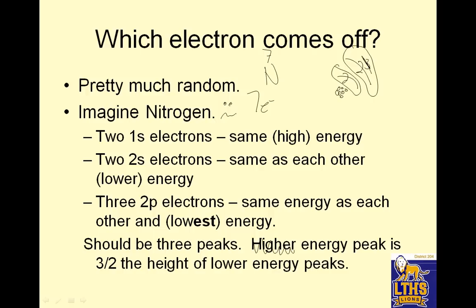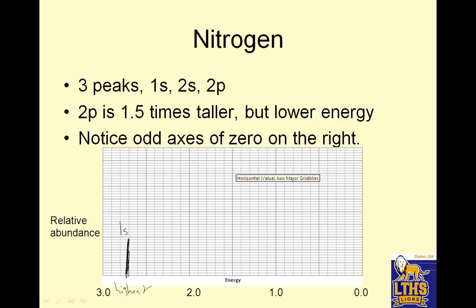Nitrogen has three peaks: 1s, 2s, and 2p. So relative abundance, and then this is the energy that it takes. So what's going to happen is there's three peaks, 1s, 2s, and 2p, and these will have distinct levels. So the energy of 1s would be, this is a relative abundance, so we'll just make relative, so it's just a line. So there's my 1s peak. And notice it's the highest energy.